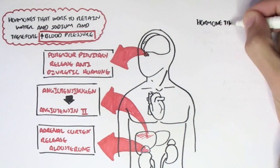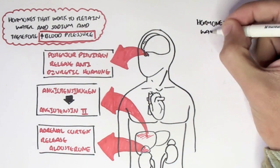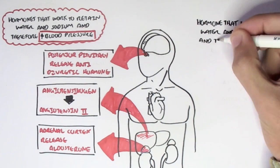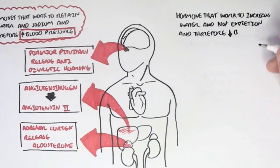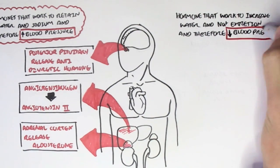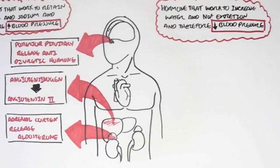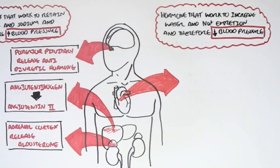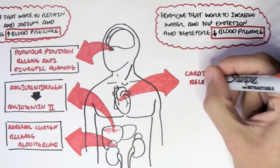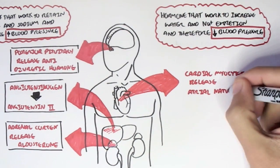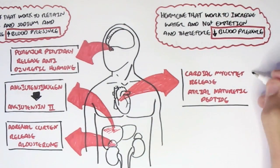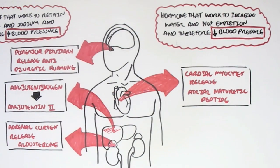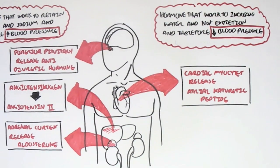Now, let's look at a hormone that works to increase water and sodium excretion, and therefore aims to decrease blood pressure. We're only looking at one hormone here, and this hormone is surprisingly secreted from the heart. It's known as atrial natriuretic peptide, and it's secreted from the atrial myocytes within the heart.